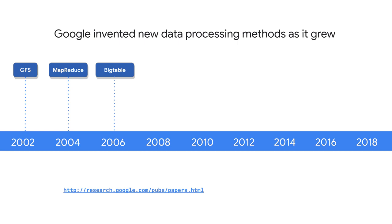One issue with MapReduce is that developers have to write code to manage all of the infrastructure of commodity servers — developers couldn't just focus on their application logic. So between 2008 and 2010, Google started to move away from MapReduce to process and query large datasets, and instead started moving towards new tools like Dremel.